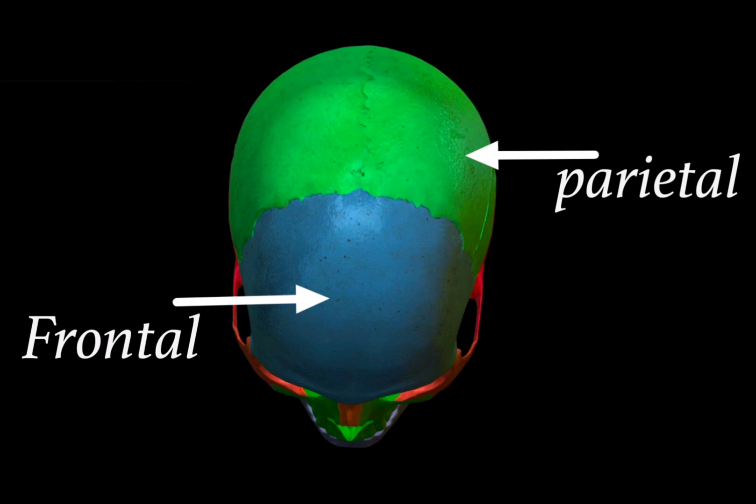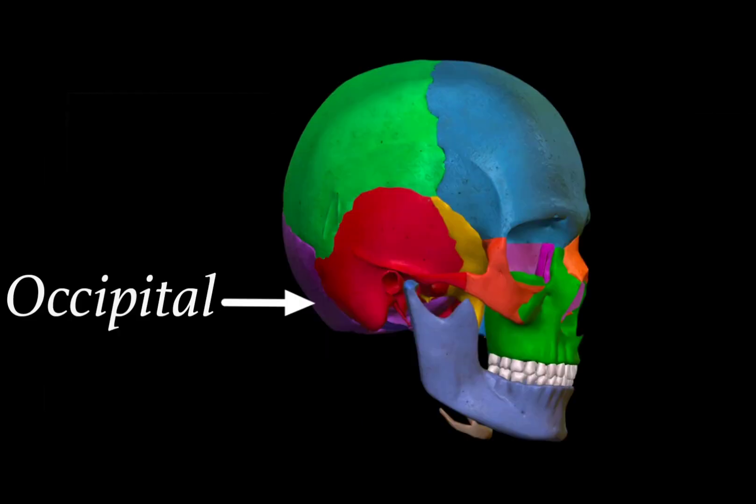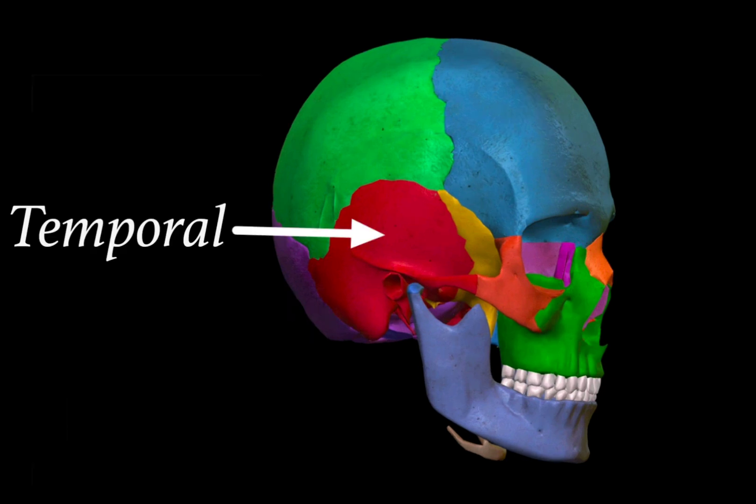Anteriorly you can also spot the frontal bone. The third bone is the occipital bone. When viewing the skull from the posterior aspect, the purple-colored bone indicated is the occipital bone. The occipital bone forms the inferior part of the skull and the base of the skull.